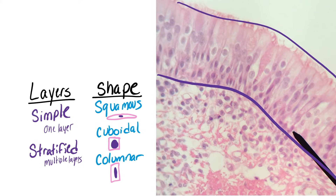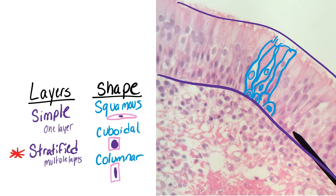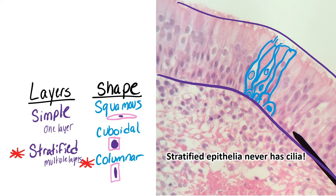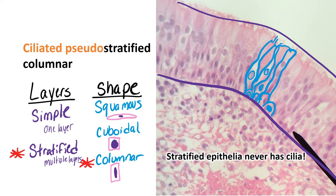In the epithelial layer, we do see multiple layers of cells, so this looks stratified. And if you look at the shape of the cells, you would say they are columns. However, look at the top — you see those cilia? You never see cilia in stratified epithelia. So this is kind of a trap: this is not actually stratified columnar. Because you see those cilia, you know that this is ciliated pseudostratified columnar. Pseudo means fake or false, so these are fake layers, because there are some short cells and some tall cells, but every cell is touching the basement membrane. To remember this, I think of it as hairy fake layers — ciliated pseudostratified.